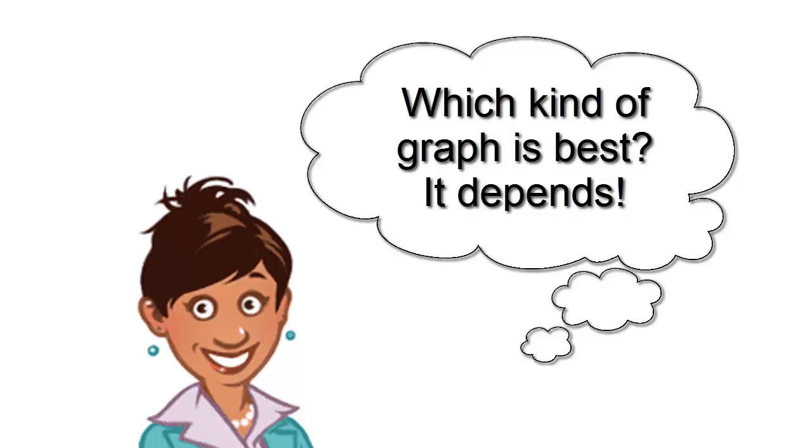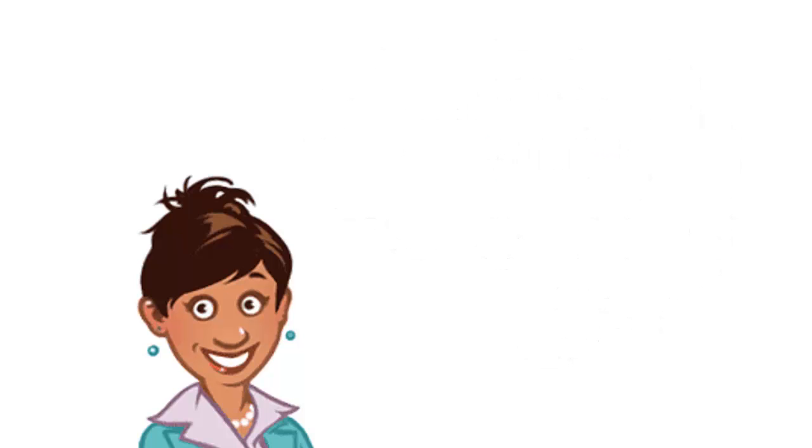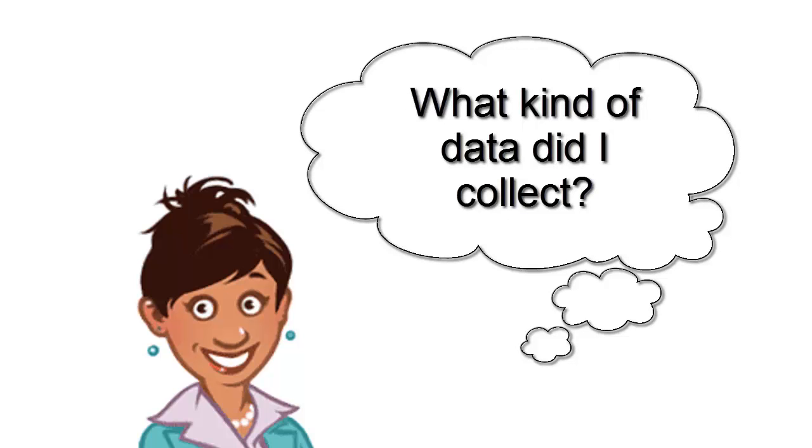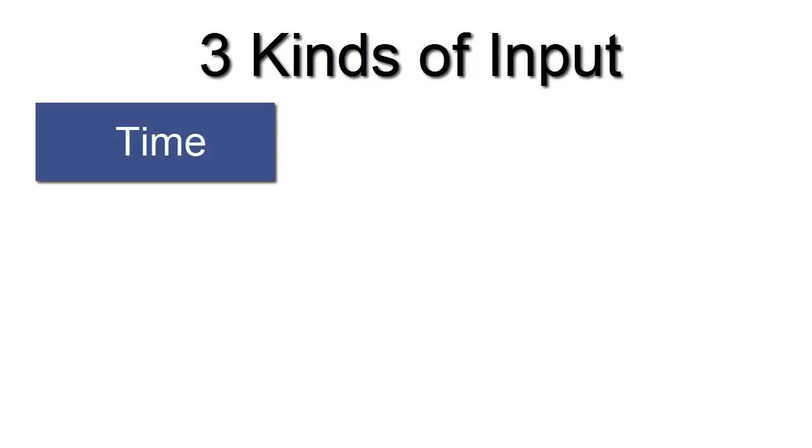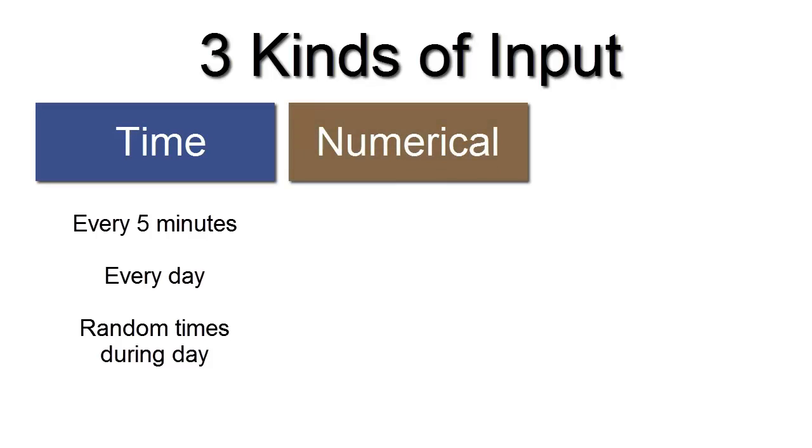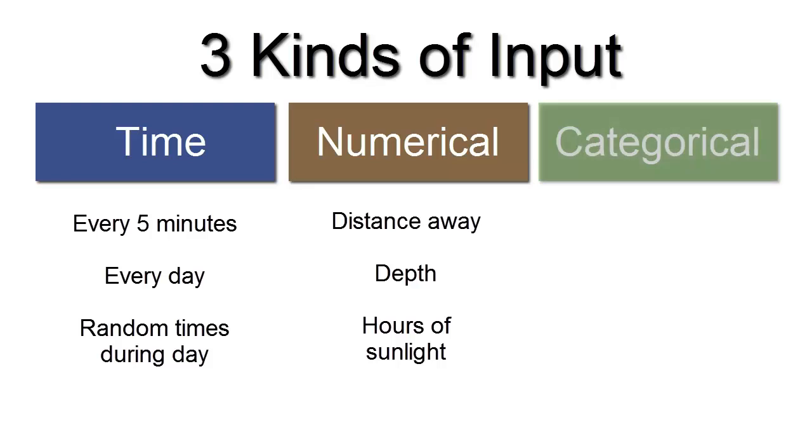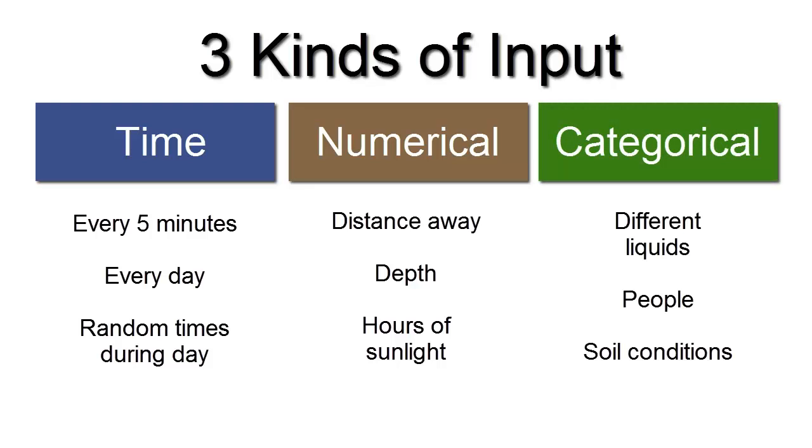And the first thing you need to do is to think about the kind of information you have. What are your inputs? What are your outputs? There's three main kinds of input. It could be time, like if you measured the temperature of water every five minutes. There's numerical, like if you measured the height of a catapult projectile at different distances away from the catapult. And there's categories, like if you measure the pH of different kinds of liquids.